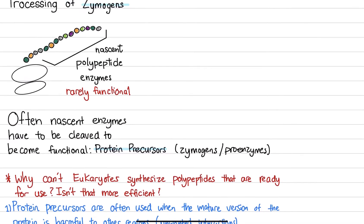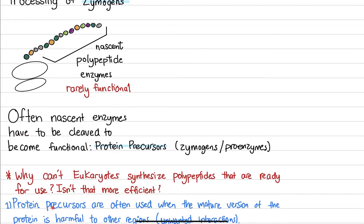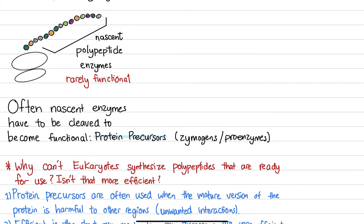Two good reasons. Number one, protein precursors or zymogens are often used when the mature version of the protein is harmful to other regions. And the cell doesn't want it to have unwanted interactions, which can be dangerous.